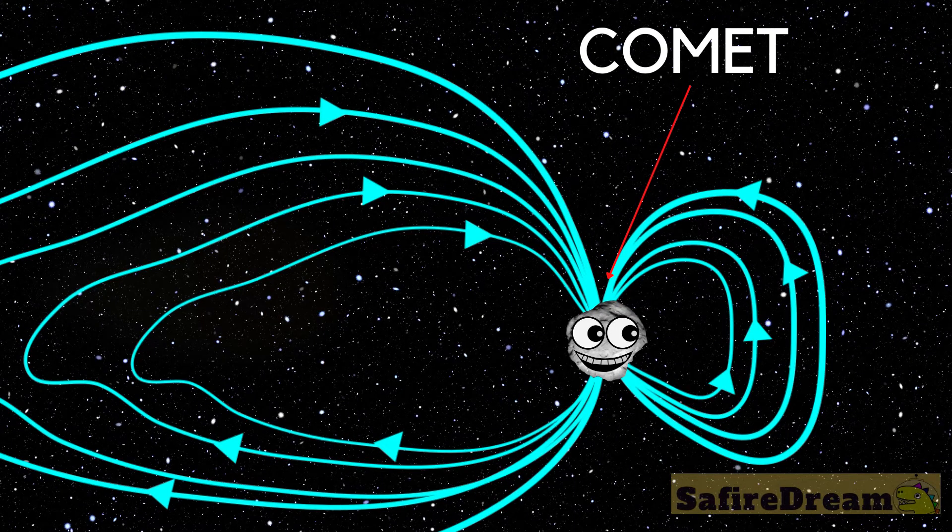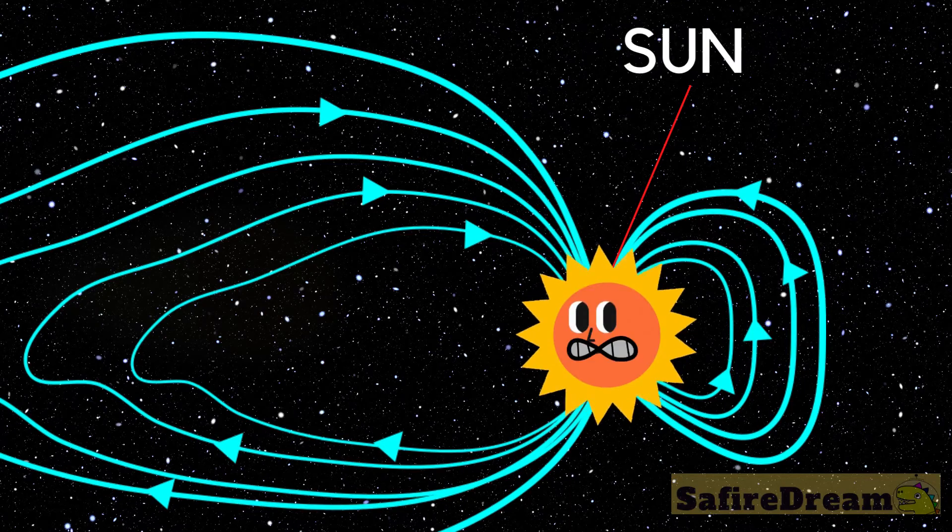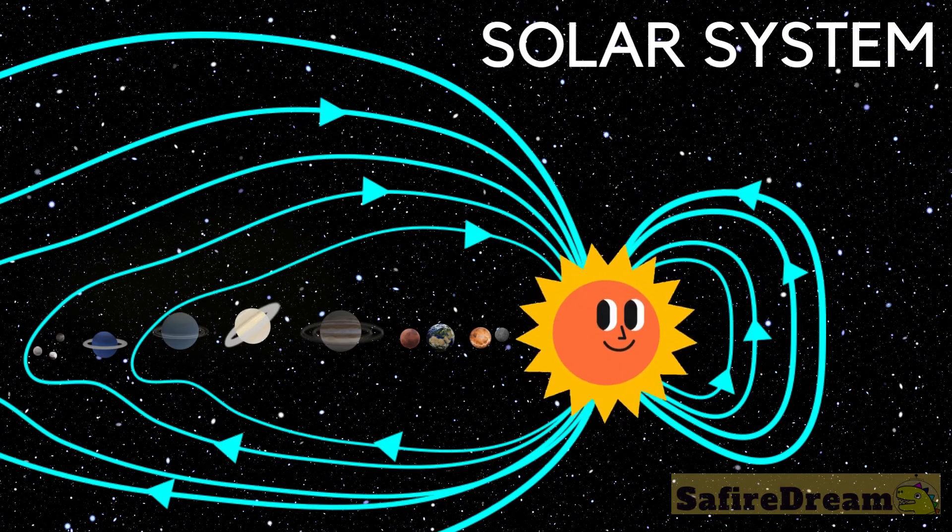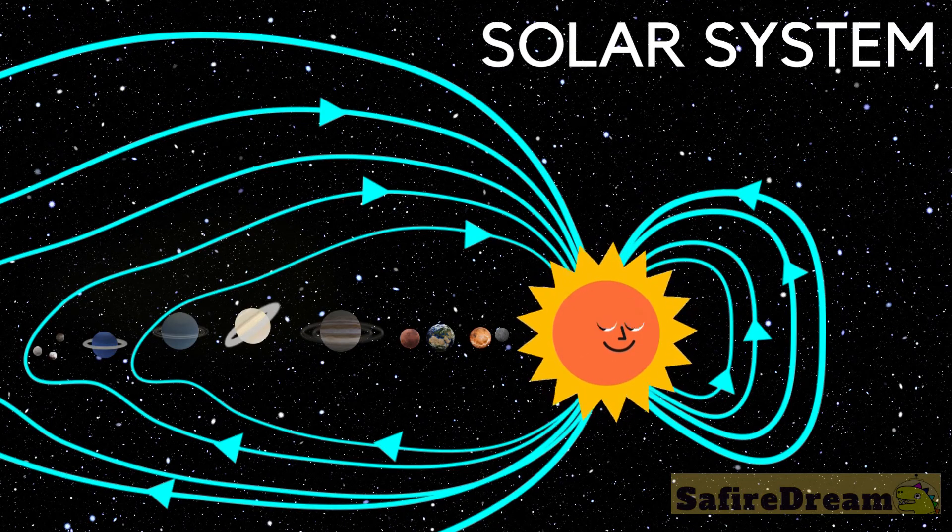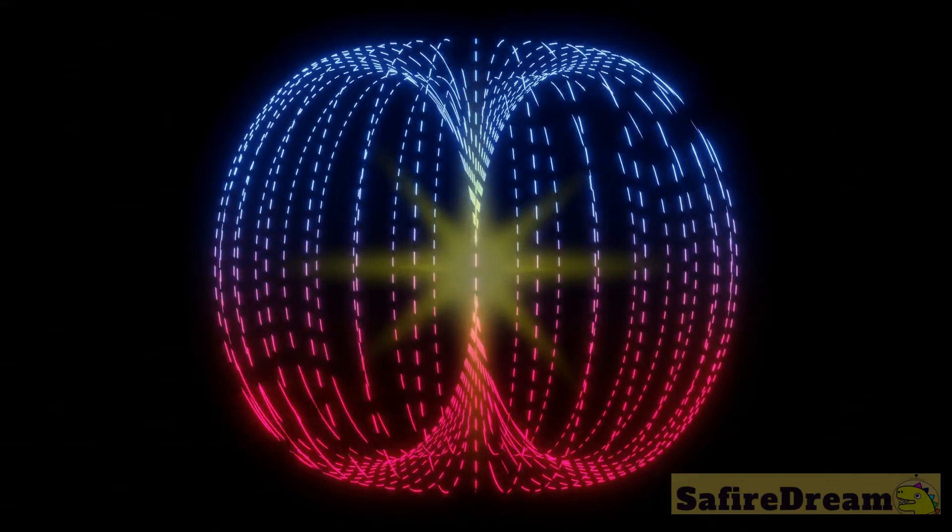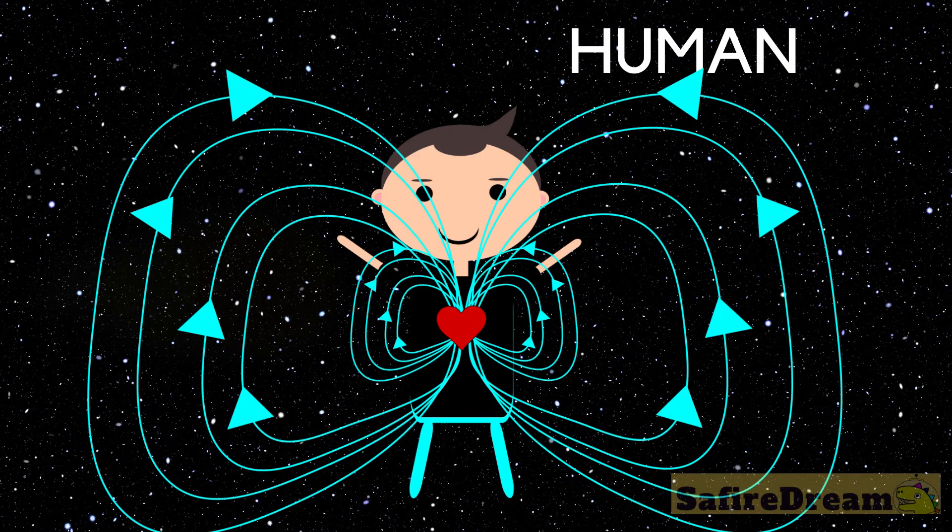Check this! This is the magnetic field of a comet. This is the magnetic field of Earth. This is the magnetic field of the sun. The whole solar system travels hidden within the sun's plasma sheath. And this is what the universe is thought to look like. And this is the magnetic field of a human.